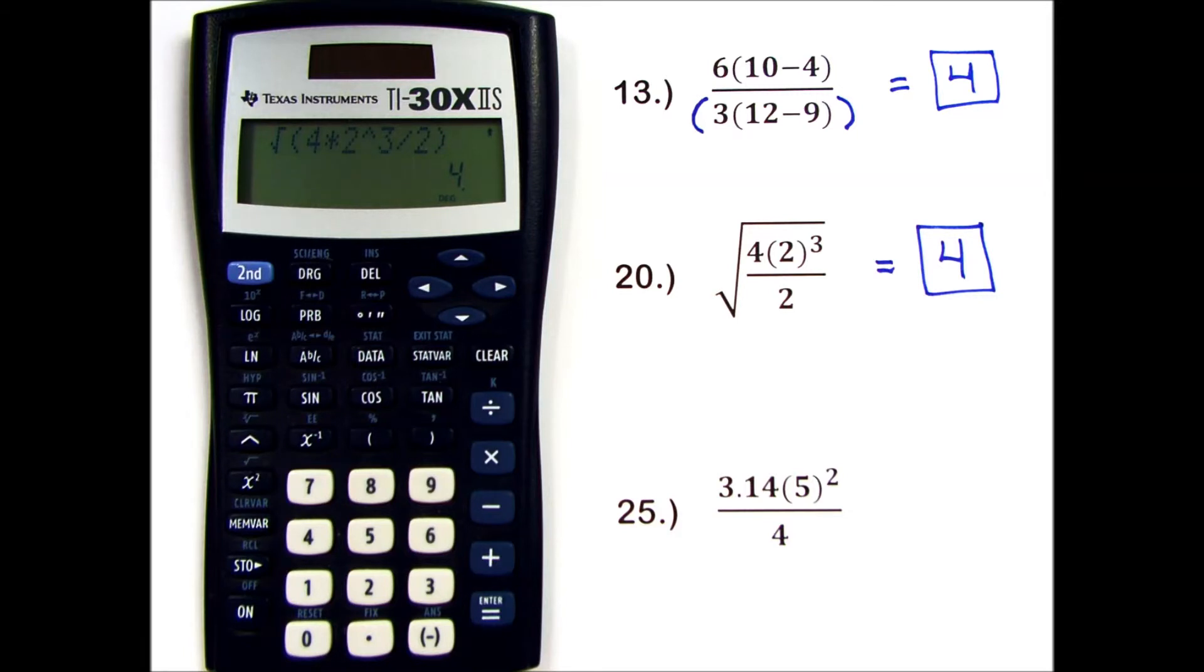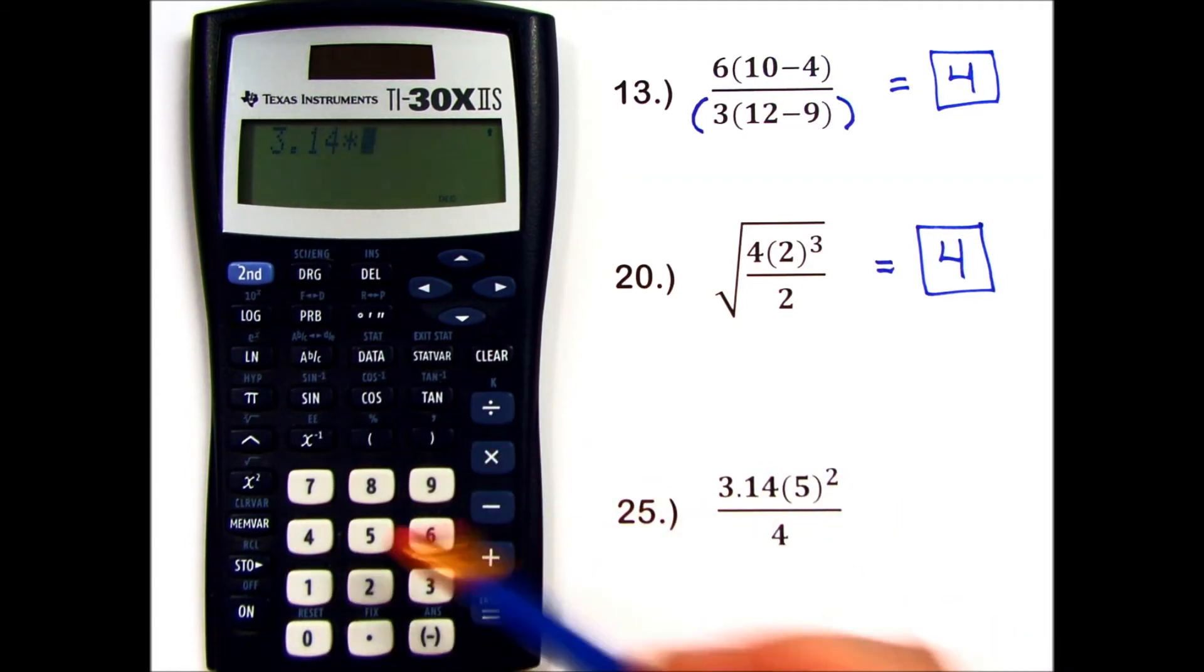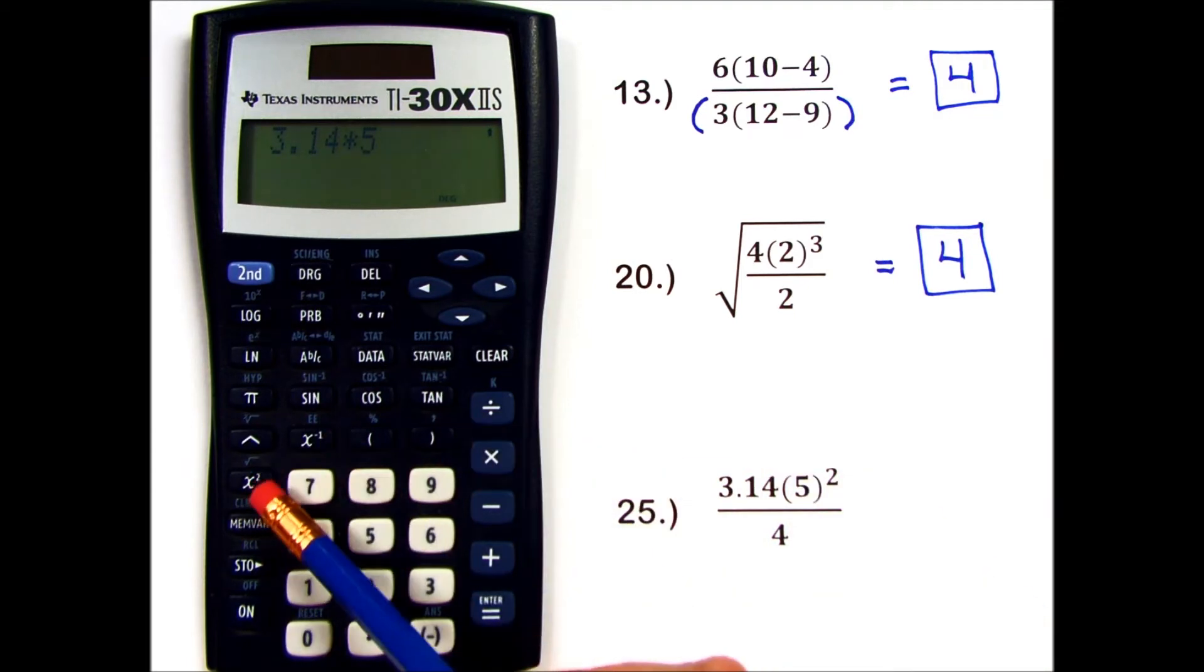Okay, and one more, number 25. I will key this in. I have 3.14 times 5 squared. I do have a squared key directly on this calculator. And then divide by 4,